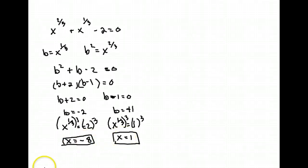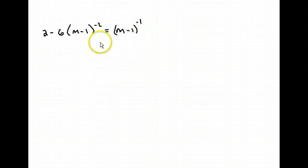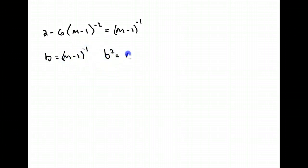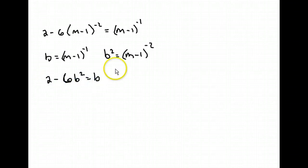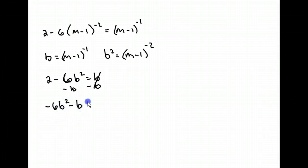Now let's say we have 2 minus 6 times (m minus 1) to the negative 2 power equals (m minus 1) to the negative 1 power. If we let b equal (m minus 1) to the negative 1 power, then b squared equals (m minus 1) to the negative 2 power. In that case, we have 2 minus 6b squared equals b. Subtracting b from both sides and putting it in order, we have negative 6b squared minus b plus 2 equals 0.